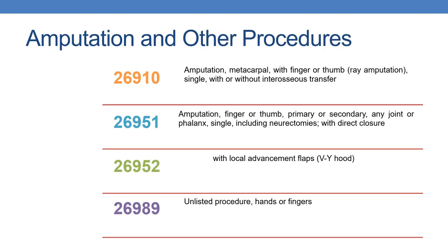Now coming to amputation and other procedure codes. 26910: amputation, metacarpal, with finger or thumb. Re-amputation, single, with or without interosseous transfer is given by 26910. Amputation, finger or thumb, primary or secondary, any joint or phalanx, single, including neurectomies, with direct closure is given by 26951. With local flap advancements is given by 26952. The unlisted procedure for hands and fingers is given by 26989.